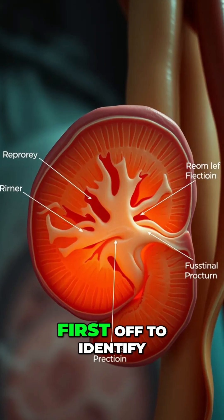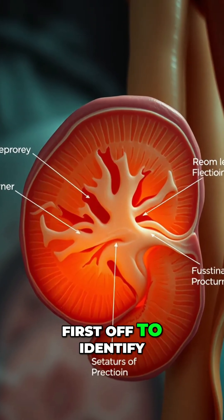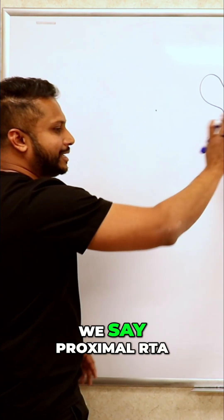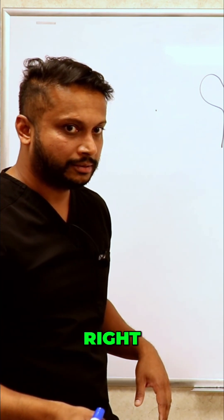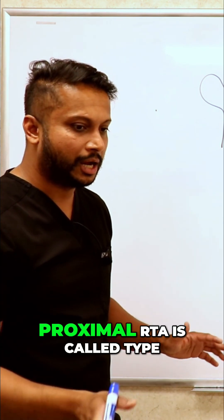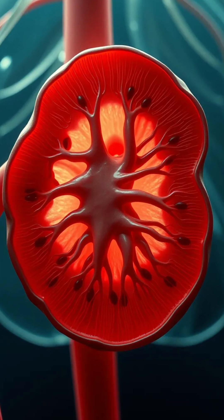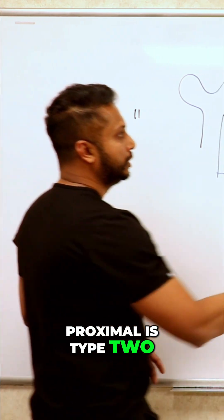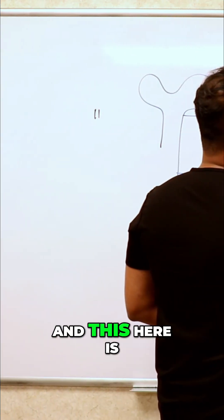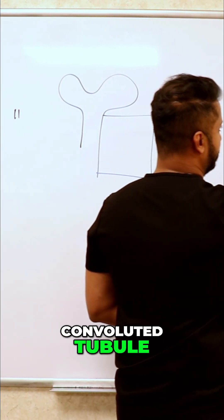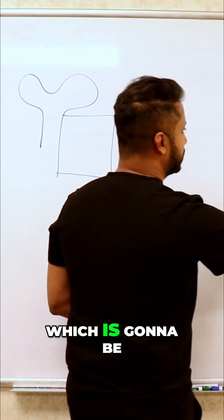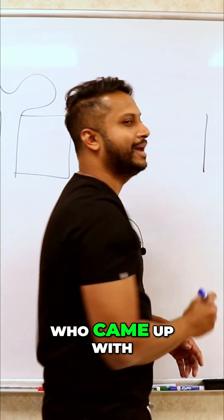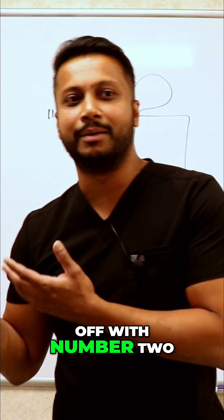We need to understand, first off, whenever we say proximal RTA — proximal RTA is called Type 2. Proximal is Type 2, and the distal convoluted tubule is going to be called Type 1.